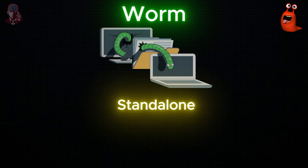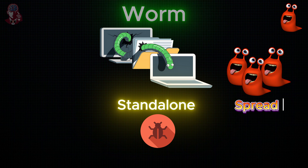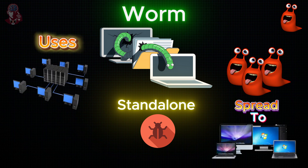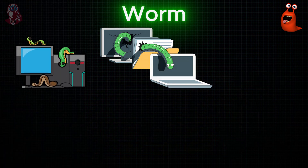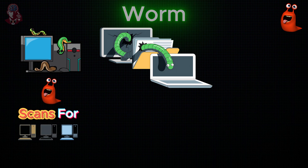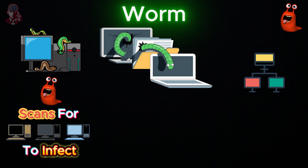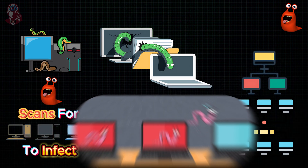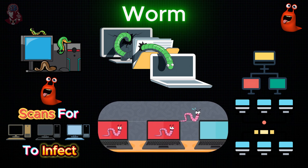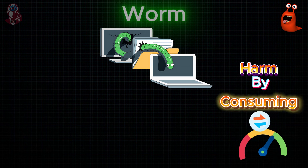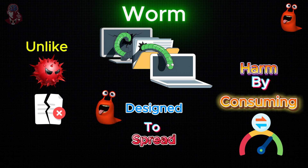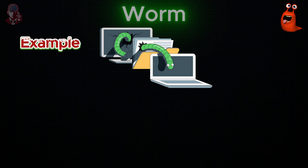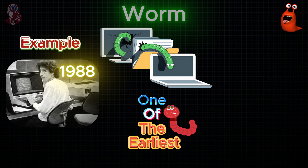Worm: A worm is a standalone malware program that replicates itself to spread to other computers. It typically uses a computer network to propagate, exploiting security vulnerabilities to gain access. Once a computer is infected, the worm scans for additional devices to infect, using newly infected computers as hosts to continue spreading exponentially. Worms usually cause harm by consuming network bandwidth, even if they don't directly damage files. Example: The Morris Worm (1988), one of the earliest worms to spread widely.